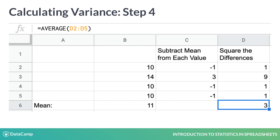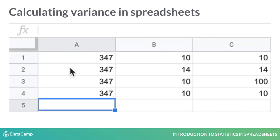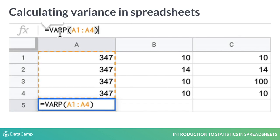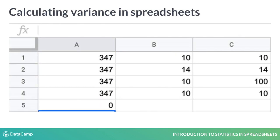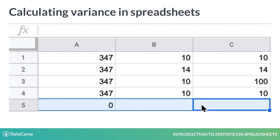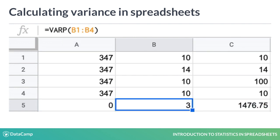Thankfully, there is a formula to calculate variance. Simply call VARP with an array, as shown in this example in which I calculate the variance for all three columns.